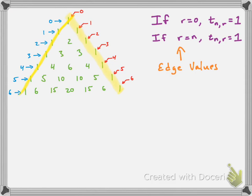That allows us to determine the edge values of Pascal's triangle, but it doesn't give us a nice way of representing the terms in the middle. So we're going to see if we can come up with one by going through some examples. Let's take a look at the term in row 5, position 2. To get that term, we added the two terms above it: the term in row 4, position 1, with the term in row 4, position 2. So that's how we got the term in row 5, position 2.